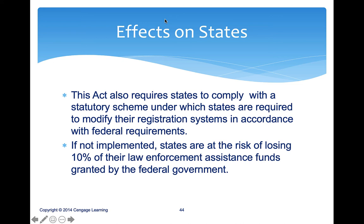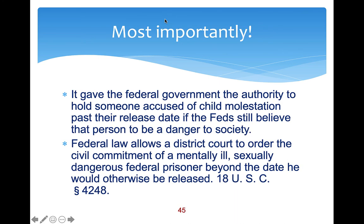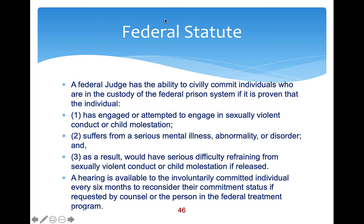If states did not implement a system in compliance with the Adam Walsh Child Safety and Protection Act, they would risk losing 10 percent of their law enforcement assistance funds from the federal government — an example of coercive federalism. One controversial part of this law also gave the federal government authority to hold someone accused of child molestation past their release date if the government still believed the person was a danger to society. Federal law allows courts to order civil commitment of a mentally ill, sexually dangerous federal prisoner beyond the date they would have been released — 18 U.S.C. § 4248.